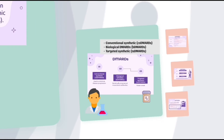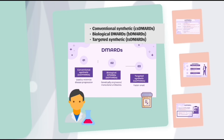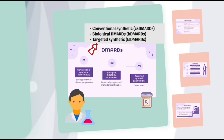The next treatment is DMARDs, or disease-modifying antirheumatic drugs. They are classified into three groups: conventional synthetic DMARDs (csDMARDs), used to minimize disease progression; biological DMARDs (bDMARDs), which are genetically engineered monoclonal antibodies; and targeted synthetic DMARDs (tsDMARDs), which have a faster onset.